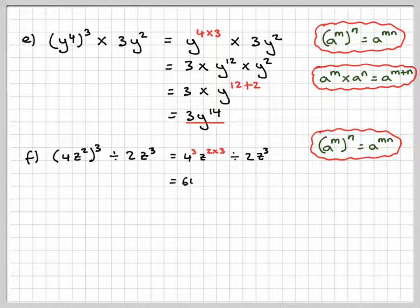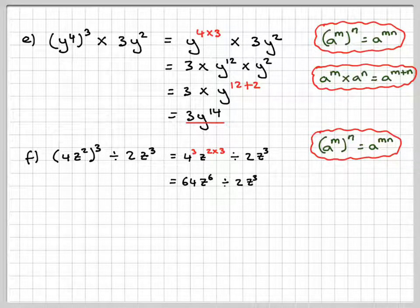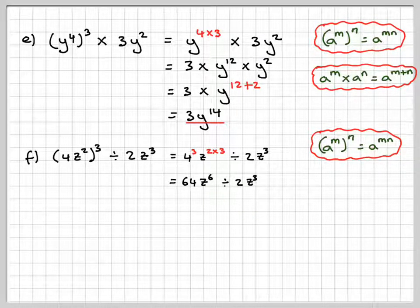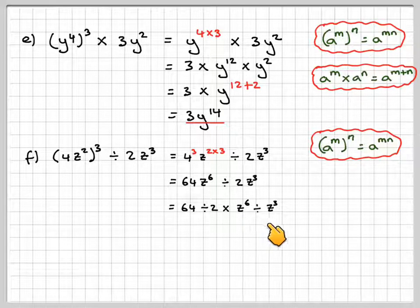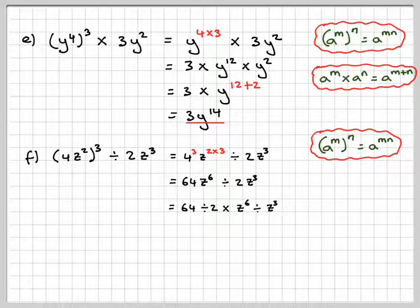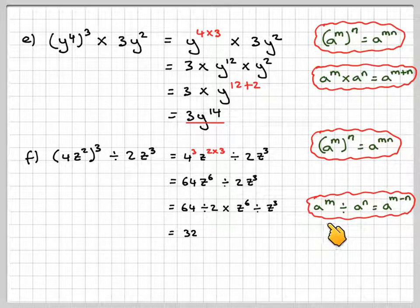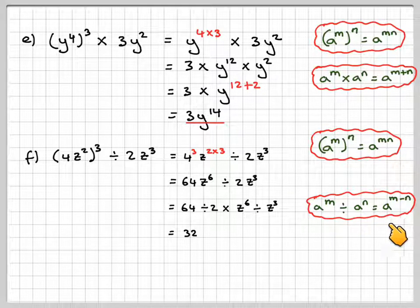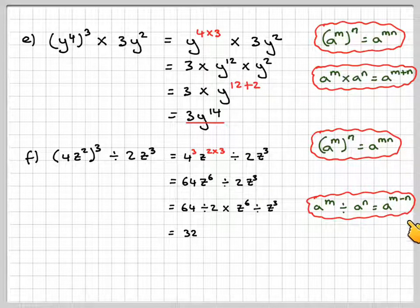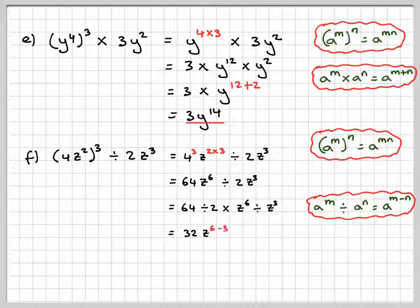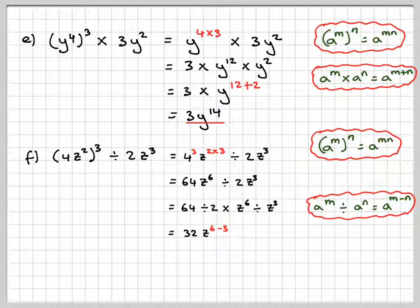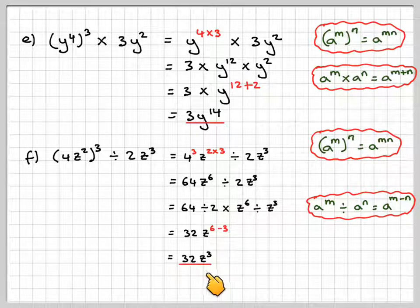4 cubed is 64. z to the power of 6 divided by 2z to the cube. So I'm going to put the numbers together. So we're going to do 64 divided by 2 times z to the 6 divided by z cubed. 64 divided by 2 is 32. And then using this rule here, a to the m divided by a to the n is a to the m minus n. It's going to give me z to the 6 minus 3, which is 32z cubed.